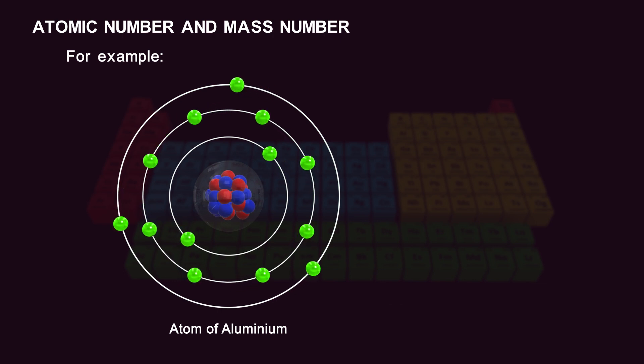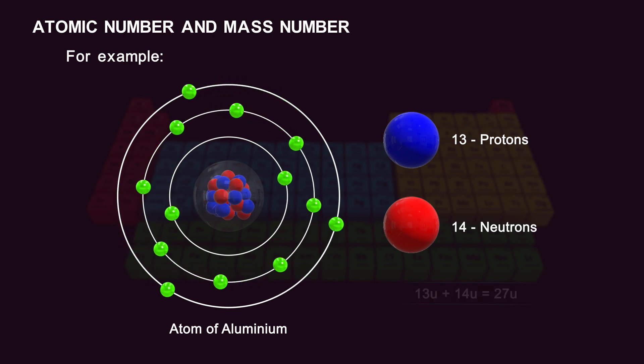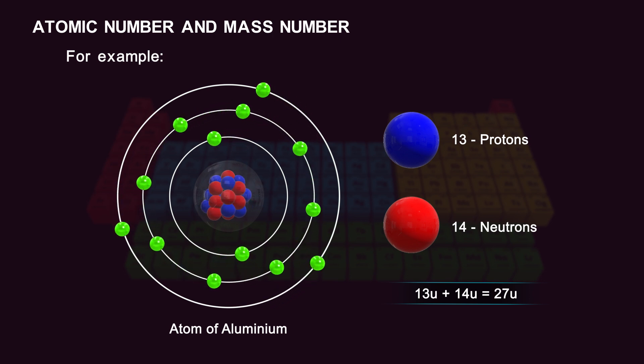In the same way, aluminium has 13 protons and 14 neutrons, and thus its mass number is 13u plus 14u equals 27u.